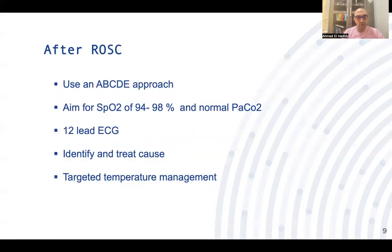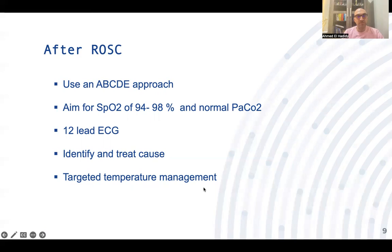After return of spontaneous circulation, use an ABCD approach for patient management. Aim for oxygen saturation 94% to 98% and normal PaCO2. Perform a 12-lead ECG to identify ischemia or arrhythmia, identify and treat reversible causes to prevent re-arrest, and use targeted temperature management — previously called therapeutic hypothermia. The details, indications, and prognosis will be discussed in a separate presentation.